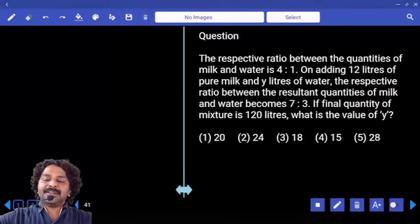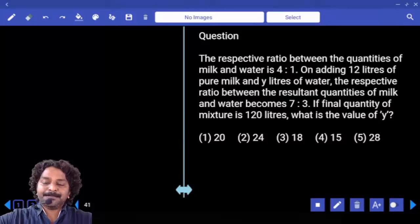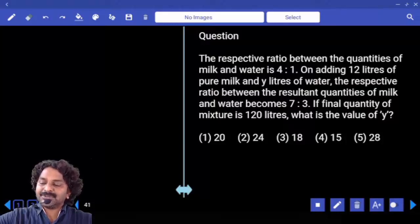The respective ratio between the quantities of milk and water is 4 is to 1. On adding 12 liters of pure milk and y liters of water, the respective ratio between the resultant quantities of milk and water becomes 7 is to 3. If the final quantity of mixture is 120 liters, what is the value of y?